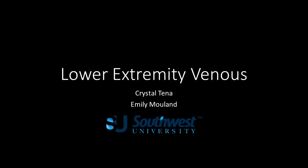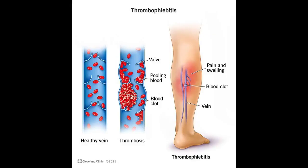The reason for this protocol is to check for deep vein thrombosis. During this exam, we are going to make sure the patient doesn't have a DVT, which is a deep vein thrombosis. It's a medical condition that occurs when a blood clot forms in the deep vein. These clots usually develop in the lower leg, thigh, or pelvis, but they can also occur in the arm.